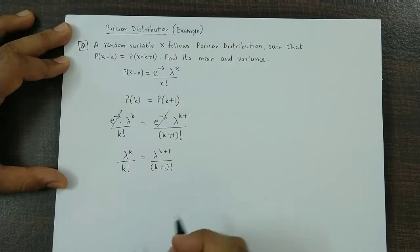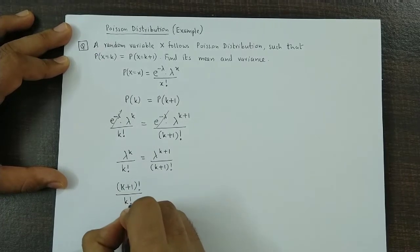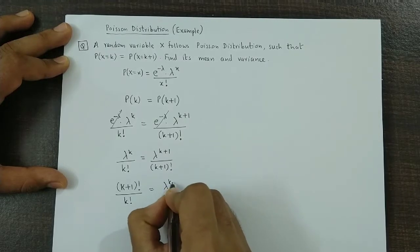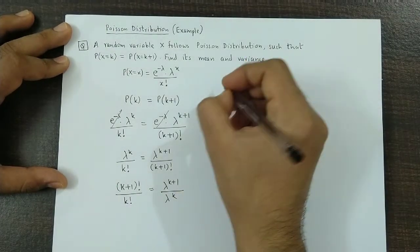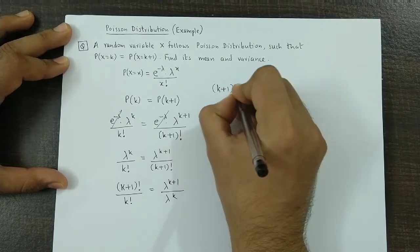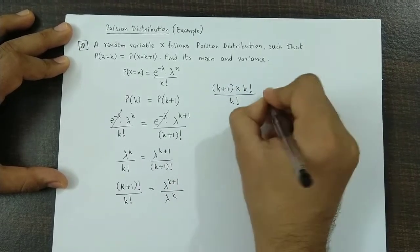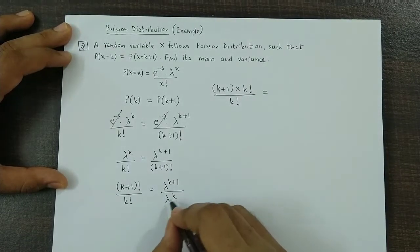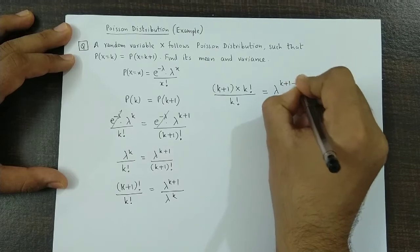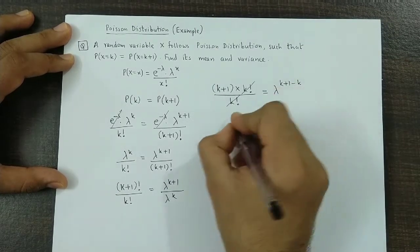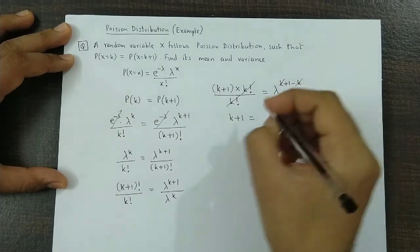Now we bring the k terms to one side. So we get k plus 1 factorial divided by k factorial is equal to lambda raised to k plus 1 minus k. Now k plus 1 factorial can be split as k plus 1 times k factorial, divided by k factorial. On the right hand side we use the law of indices: a raised to m upon a raised to n is a raised to m minus n. So we have lambda raised to k plus 1 minus k. The k factorial cancels, giving k plus 1 equals lambda raised to 1, which is lambda.